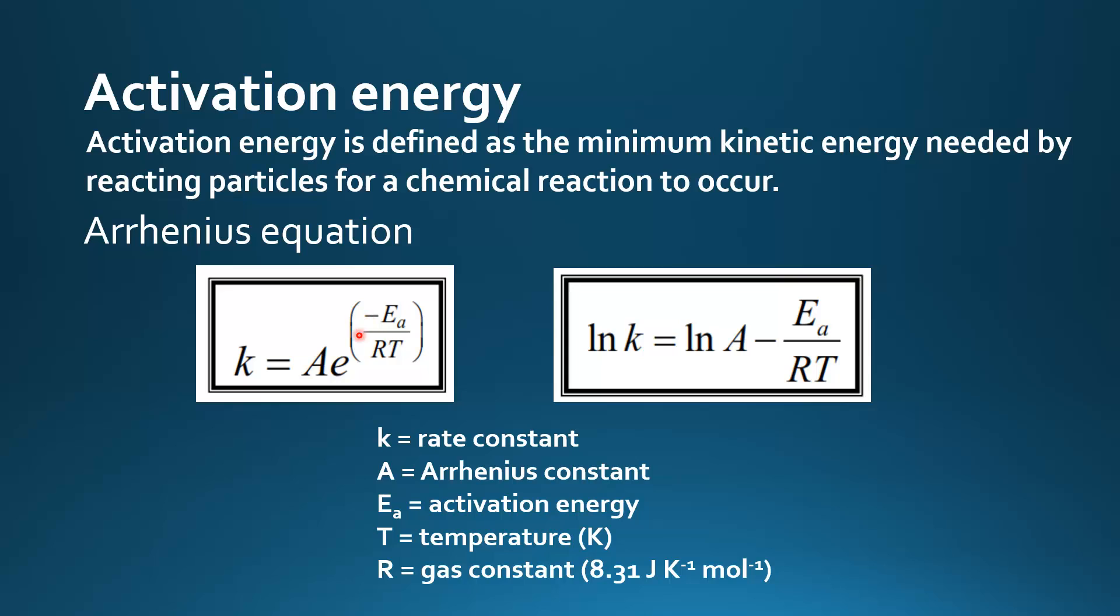Here we have the Arrhenius equation. k is the rate constant, A is the Arrhenius constant, Eₐ is the activation energy, T is temperature in Kelvin, and R is the gas constant. If we take the natural log of both sides of this equation, we end up with this new equation over here.